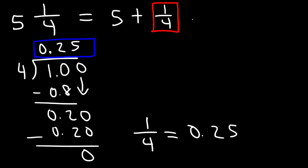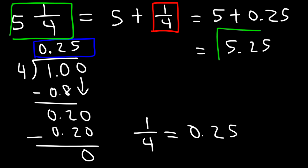So we're going to say that 1 over 4 is equal to 0.25. So 5 plus 1 fourth is 5 plus 0.25 which is 5.25. And so that is the value of this mixed number. 5 and 1 fourth is equal to 5.25.